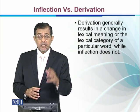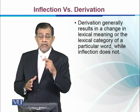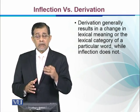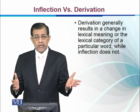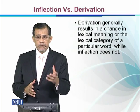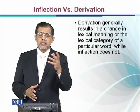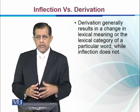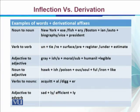Derivation generally results in a change in lexical meaning or the lexical category of a word, while inflection does not. When we add a derivational morpheme to a word it changes the class, whereas when we add an inflectional morpheme to a word it does not change the class — though in certain derivational cases the class may remain the same. Here are some examples of derivational affixes.